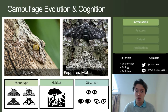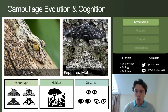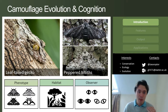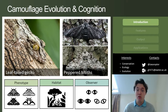Animals vary in which colors they can see, in the detail with which they can see, but also in their cognition and their ability to recognize and remember their prey. All of these make the standard experimental design of 'manipulate this and see what happens' quite difficult with regards to figuring out the optimization of animal camouflage.